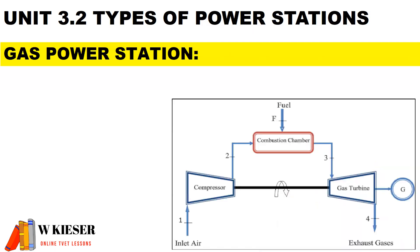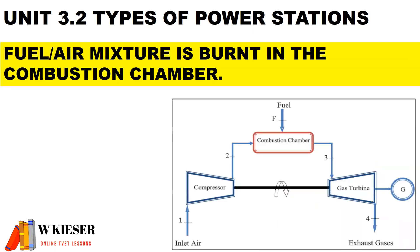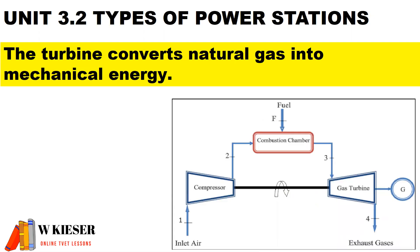A gas power station has a fuel and air mixture which is burnt inside the combustion chamber, and the turbine converts natural gas into mechanical energy.